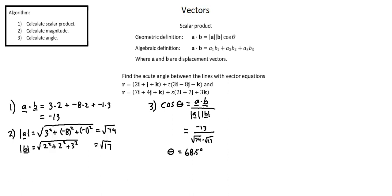I want to add two concluding comments. One: if you're given a scalar product problem with the angle between two vectors and need to find the scalar product, you can either use the geometric definition — calculate the magnitudes, find the cosine value of the given angle, and multiply those three values — or use the algebraic definition with the x, y, and z components of the two vectors.